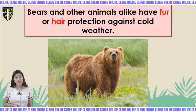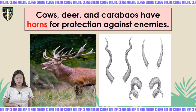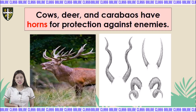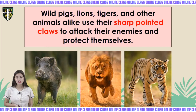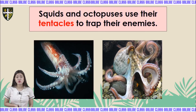Cows, deer, and carabaos have horns for protection against their enemies. Wild pigs, lions, tigers, and other animals use their sharp pointed claws to attack their enemies and protect themselves. Squids and octopuses use their tentacles to trap their enemies.